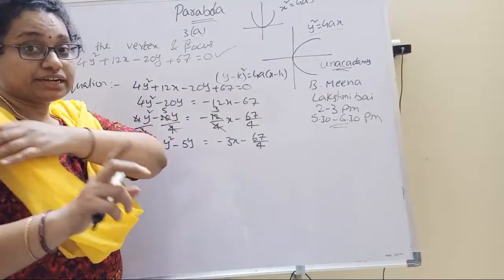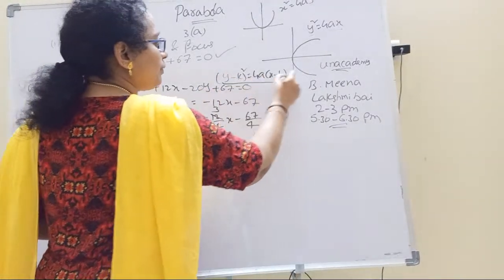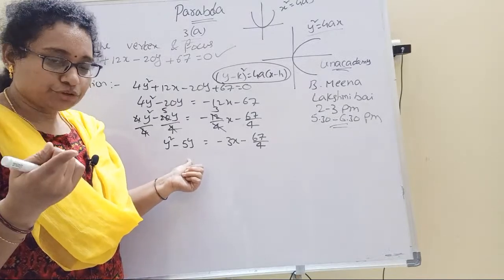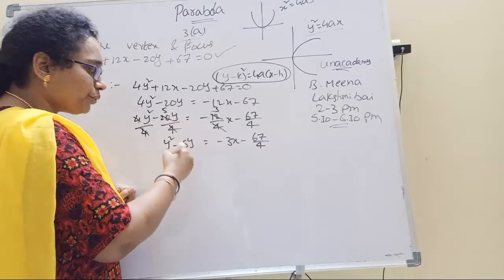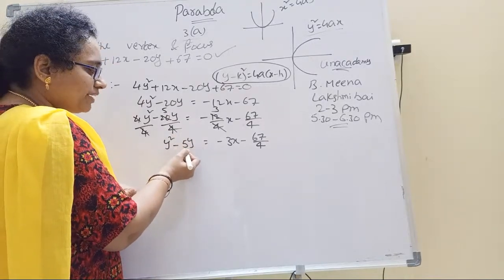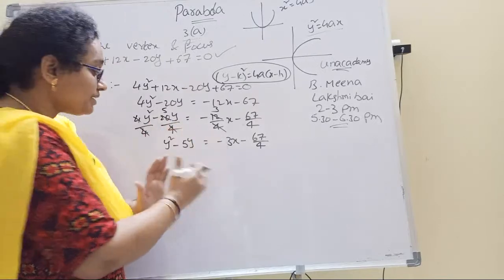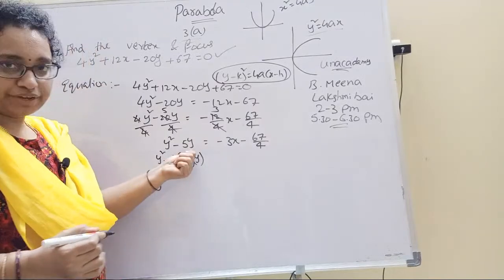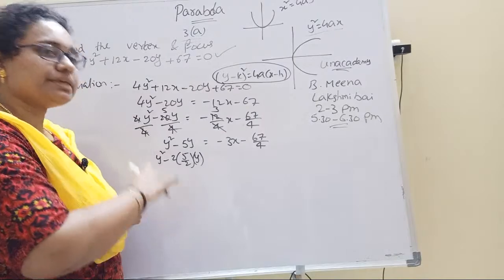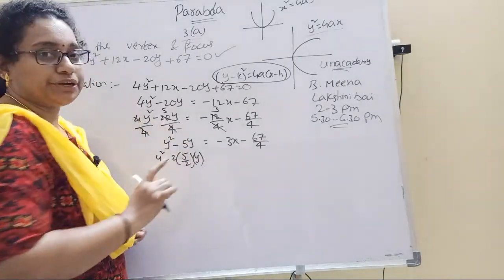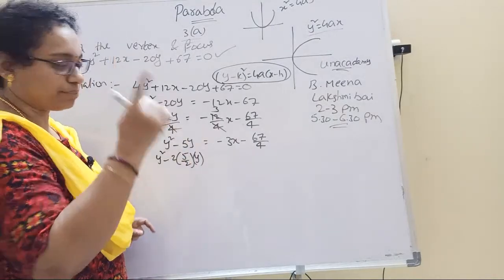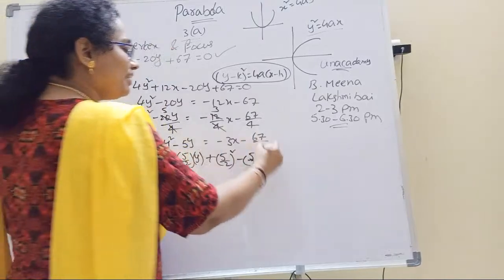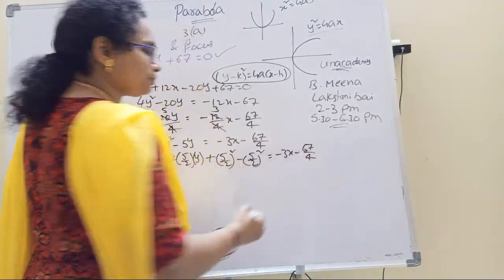Now, perfect complete the square. You know y square minus 5y, you can convert it into the square y minus k whole square. If we complete the square, we take 2ab term. 2 times what times y gives 5y? That is 5 by 2 y. So b is 5 by 2. Now, b squared is only adding and subtracting because a squared and 2ab term are there, but b squared is not there. So 5 by 2 whole squared minus 5 by 2 whole squared, adding and subtracting. Minus 3x minus 67 by 4.